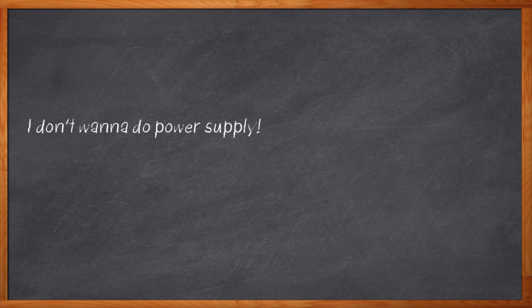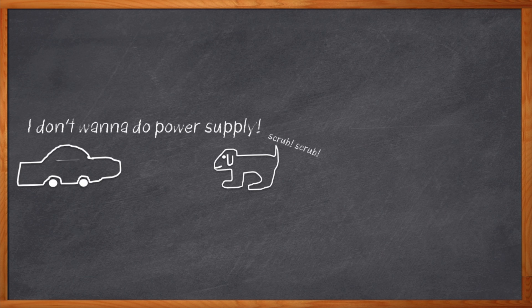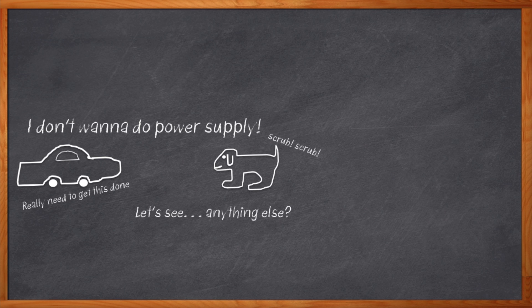Know what I procrastinate about the most in my industrial designs? Power supply. I tend to get all the rest of my design finished, then wash the dog, tidy up my documentation, change the oil in my car, reorganize my lab bench, empty my spam folder — anything to avoid having to think about how to make a nice stable 5-volt DC out of 24-volt DC. Power supply design is just unglamorous enough to be boring and just complicated enough to be challenging, and that makes it a prime target for procrastination.